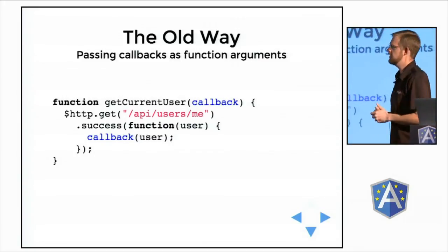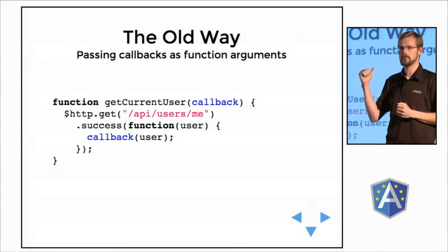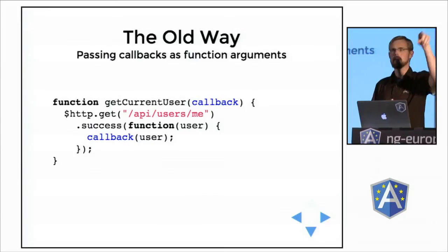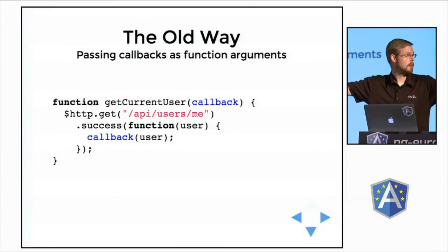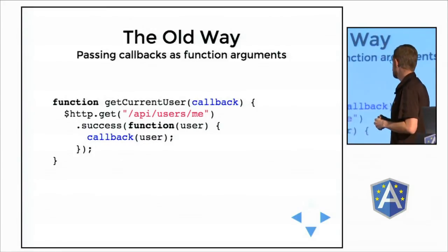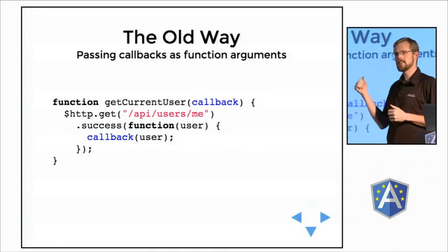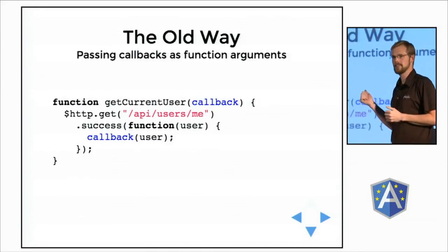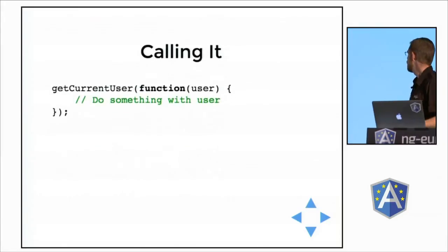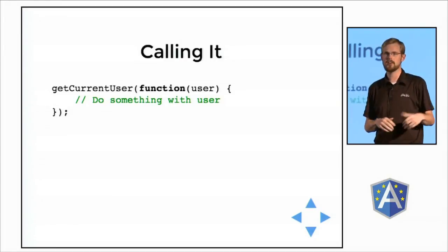This is the old way. The idea is you have a function whose job is to do an asynchronous operation — in this case, getting a resource from a URL on your server. The obvious implementation is to pass a callback as the first parameter to your function, and the code will call that callback as soon as the resource is available. Here's how you would use it as a caller: you would say get current user, pass in your callback, and off you go. The callback gets called and the user object gets passed in.